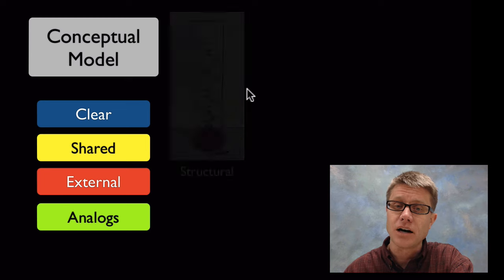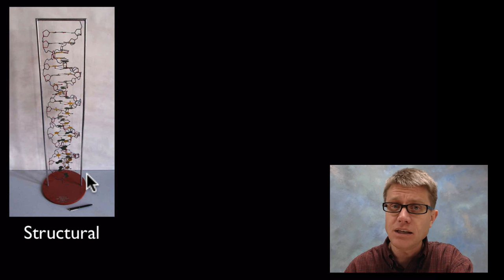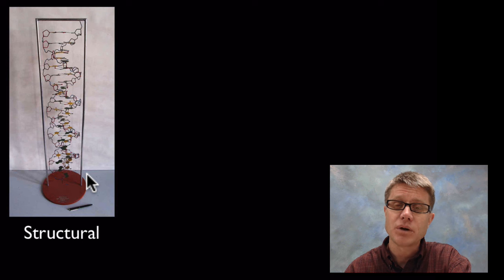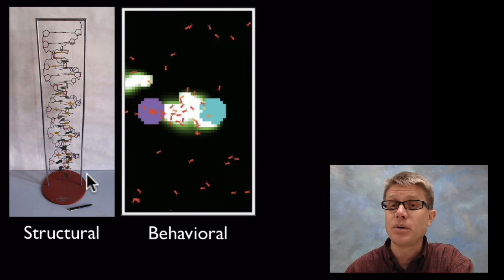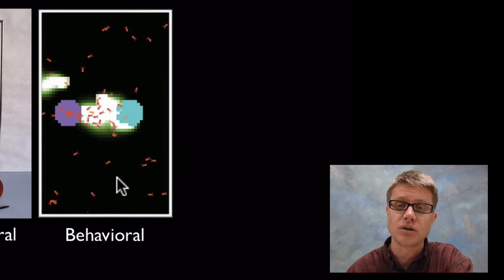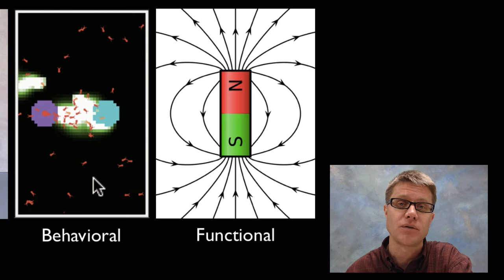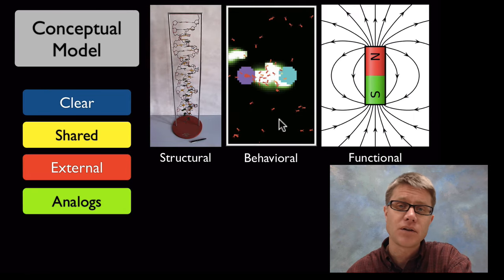Those analogs can basically be structural — for example, the structure of DNA in a model. We haven't seen DNA per se; we can't see it, it's too small, but we can build models that explain how it works. It could be a behavioral model showing how something is going to perform — for example, ants foraging, or a wing in a wind tunnel. Or we could look at its function, such as the lines of magnetism around the different fields of a magnet. These are different analogs.